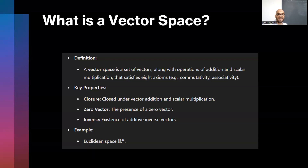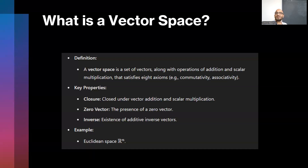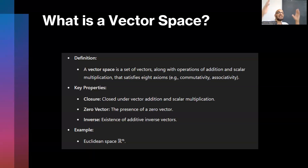We also talk about the existence of additive inverse vectors. When we have two or three vectors, we can build a space that comes with eight characteristics — eight axioms. As an example of the vector space, you can talk about the Euclidean space. For example, the two-dimensional space — you have a reference frame with x and y axis. Every point in that space comes with two components, x and y. This represents a two-dimensional Euclidean vector space. If the dimension is two, you call it a plane; if the dimension is three, you call it a space.